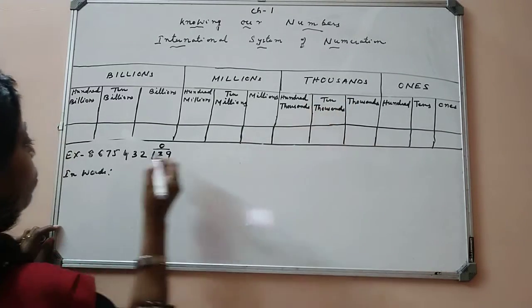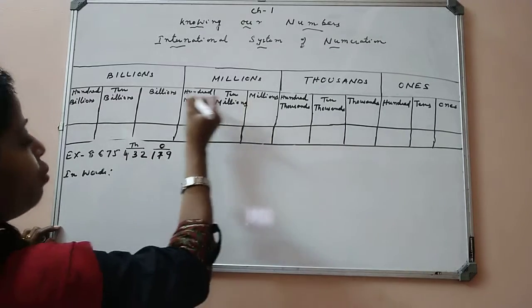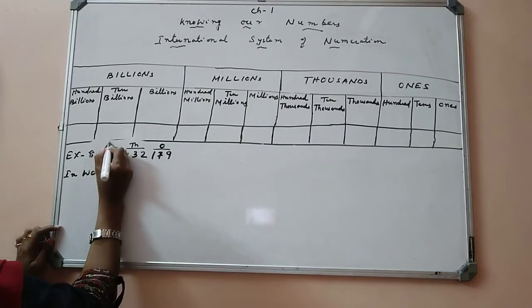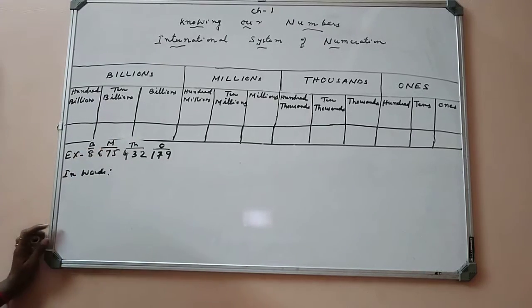Then we have thousands, again three places. This belongs to thousands. Again, for millions, we have three places. This is million, and the remaining here is billion.